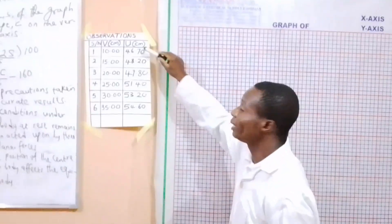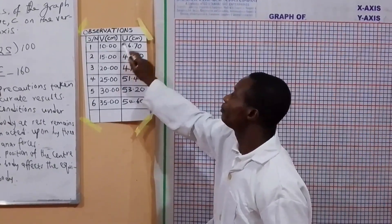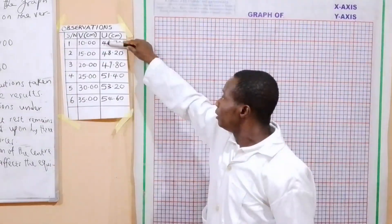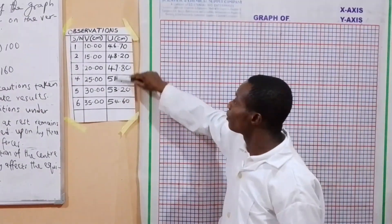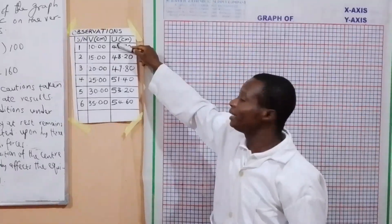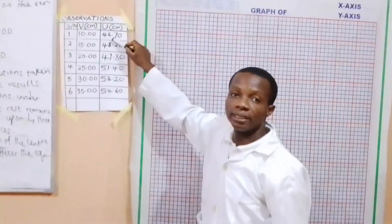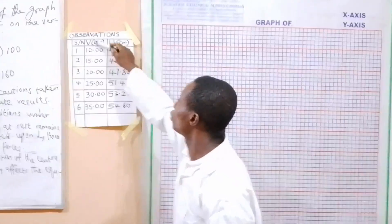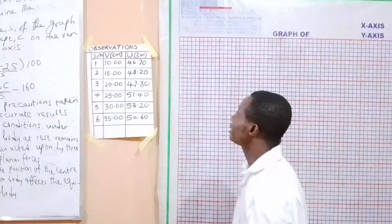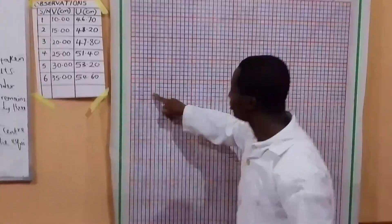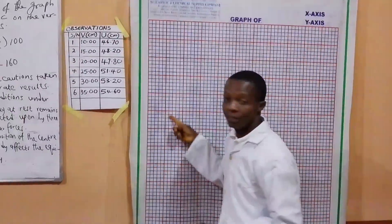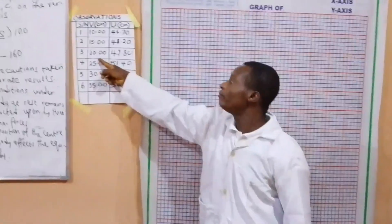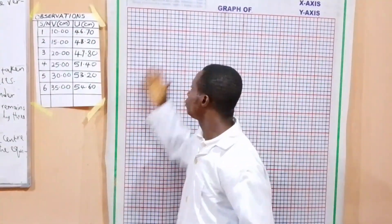So what do we do first? We get the scale. So what is the scale of the graph? This is on the horizontal axis and this is on the vertical axis. You can see that this one cannot start from 0 — it is not near 0 — so we can start from 40. Our zero point will be 40 at the origin. While here we can start from 0. We can use 1 cm to represent 2 cm on the vertical axis, while here 1 cm can be used to represent 5 cm. So let's do that right now.